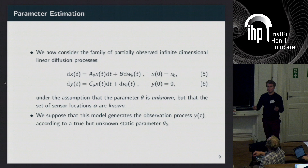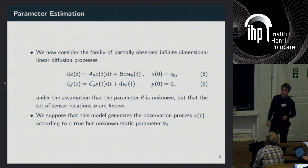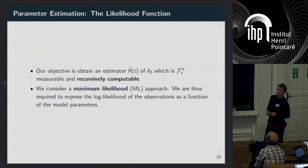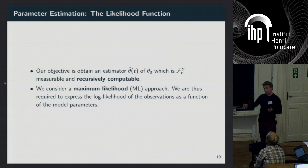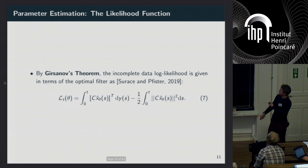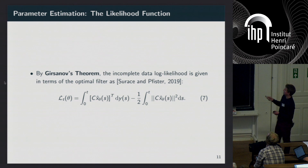Moving on to parameter estimation: let's assume the sensors are fixed for now. We assume the model generates the observation process according to some true but unknown parameter. We're interested in online estimation, so we want some estimator of the parameter which is measurable with respect to the observation sigma-algebra and also recursively computable — it doesn't rely on previous observations. We're going to use a maximum likelihood approach, defining the maximum likelihood in terms of our optimal filter via Girsanov's theorem.